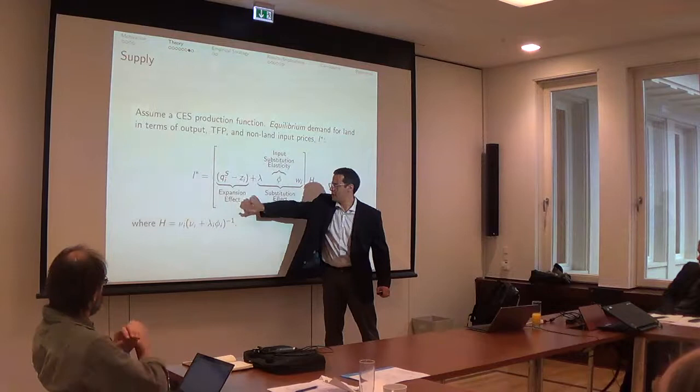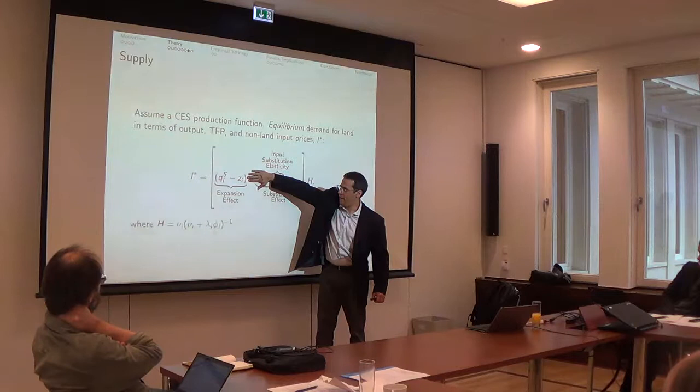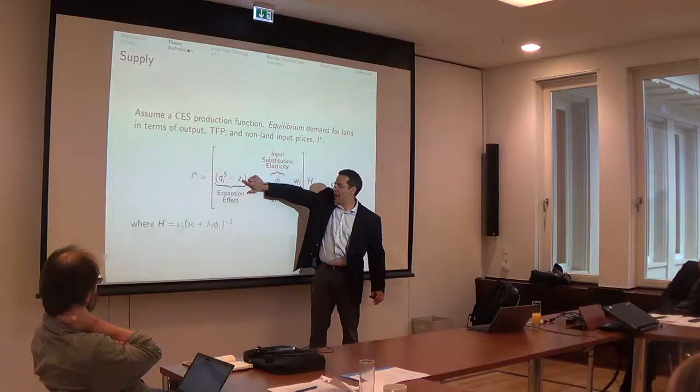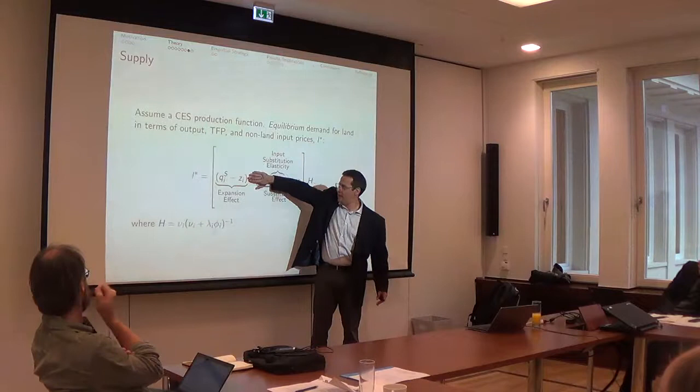So the derived demand for land in a CES production function can be simplified again into these two effects, expansion effect and substitution. The expansion effect is simply the fact that if you produce more, you need more land. That's net of technological change. So this is Borlaug's hypothesis at work. If you have more production and you become more productive, you need less land. So you have that trade-off there.